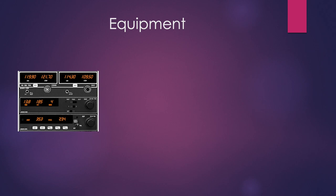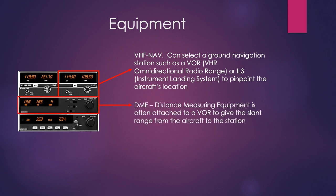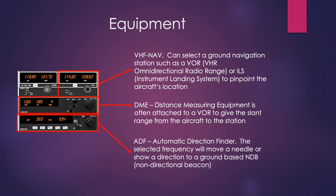Now we can look at some of the other boxes in more detail. We have the VHF Navigation box, where we can select a ground navigation station such as a VOR or ILS to pinpoint the aircraft's position — this is radio navigation, covered in more detail in the General Navigation section. The DME — Distance Measuring Equipment — works in conjunction with a VOR and measures slant range from the tuned station. The ADF — Automatic Direction Finder — can be tuned to an NDB, a Non-Directional Beacon, and a needle in the aircraft points to where that beacon is, useful for a position fix.